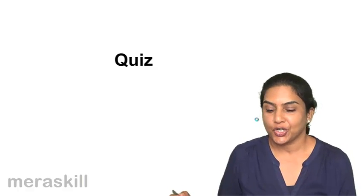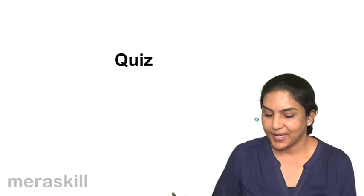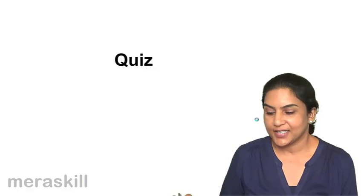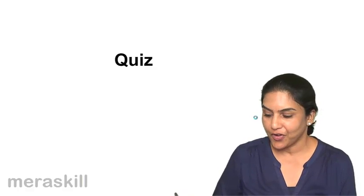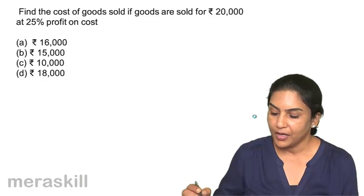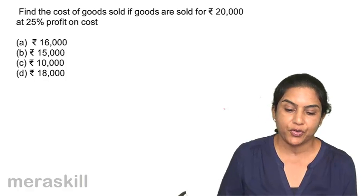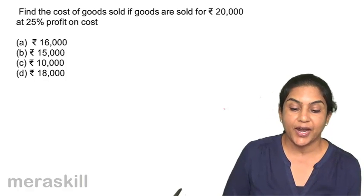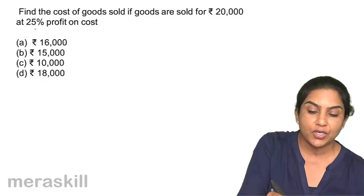Let us take a short quiz and test our understanding of single entry so far. Find the cost of goods sold if goods are sold for $20,000 at 25% profit on cost.